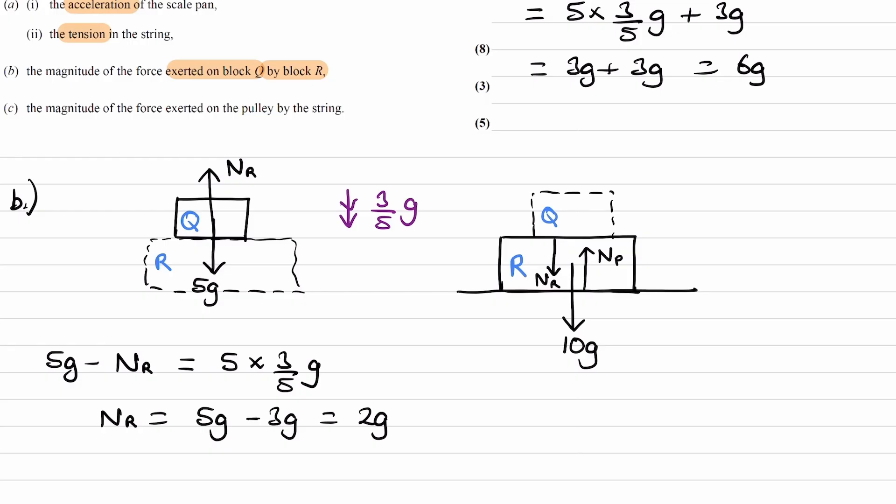So, just to be clear, we could have also have done this by considering block R, but it would have been much more complex because we would have had to then worked out what NP is first. And, that's not so easy.